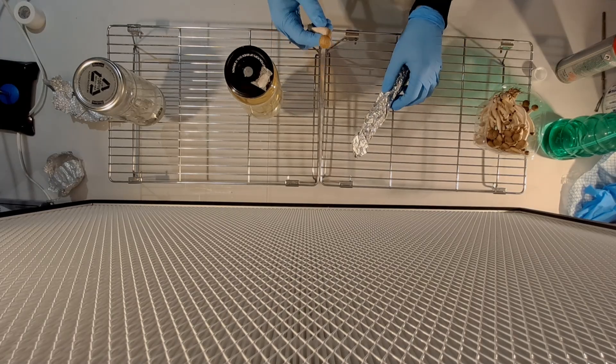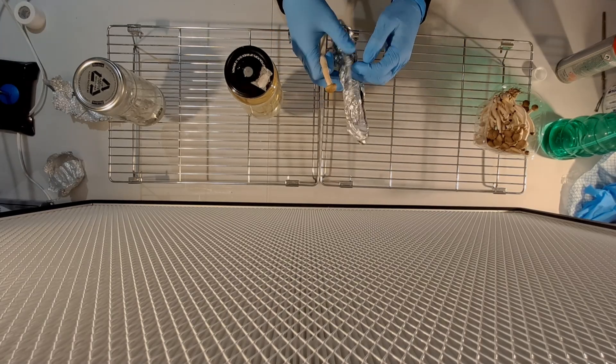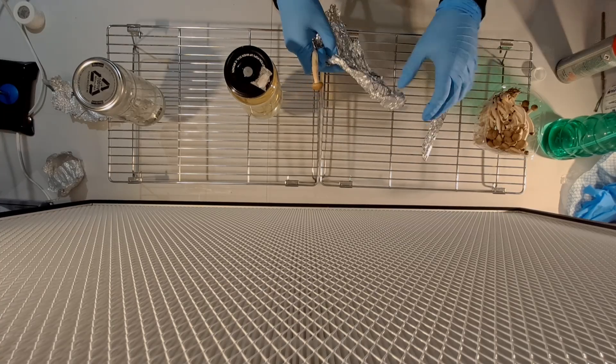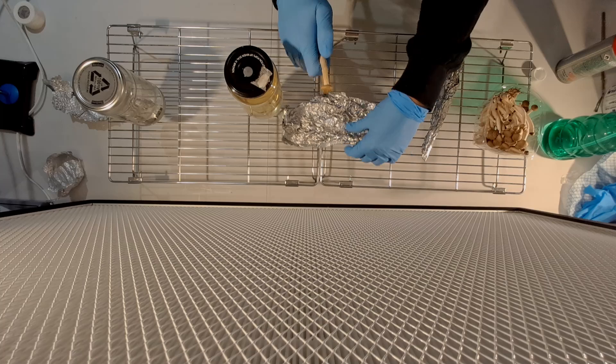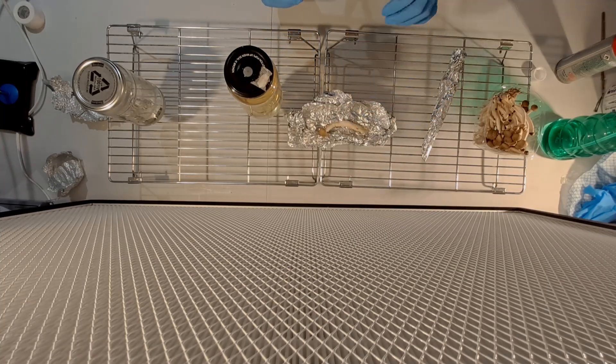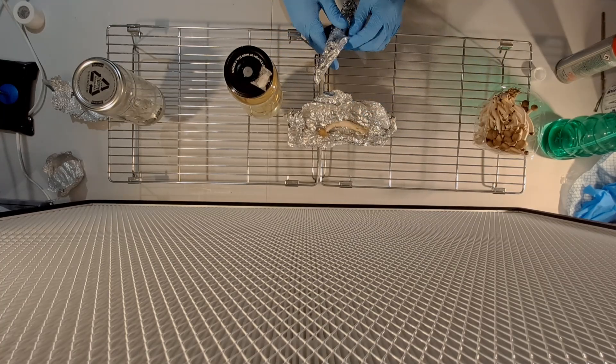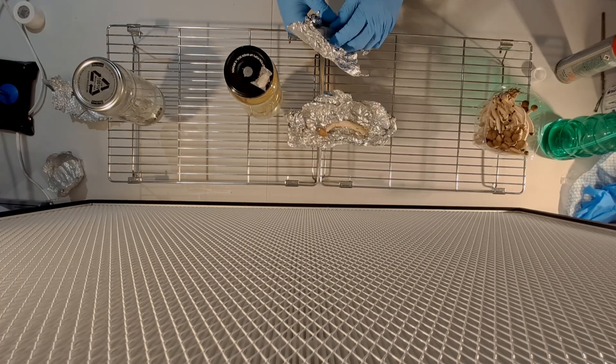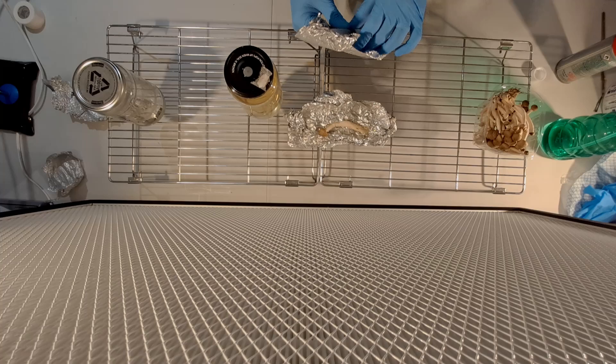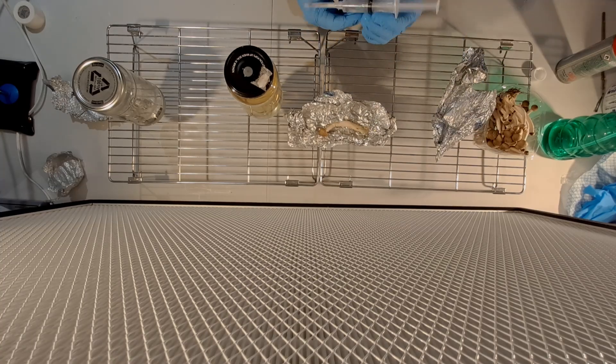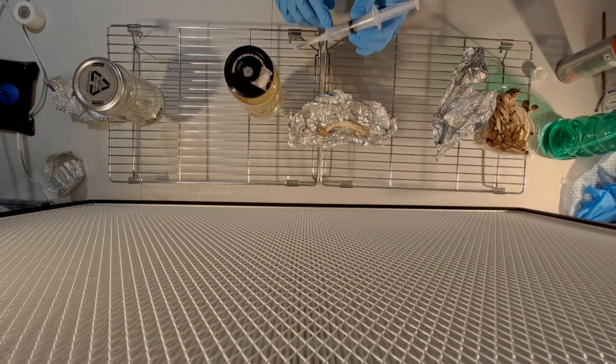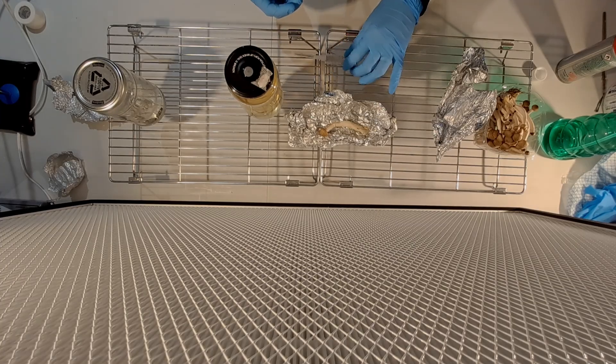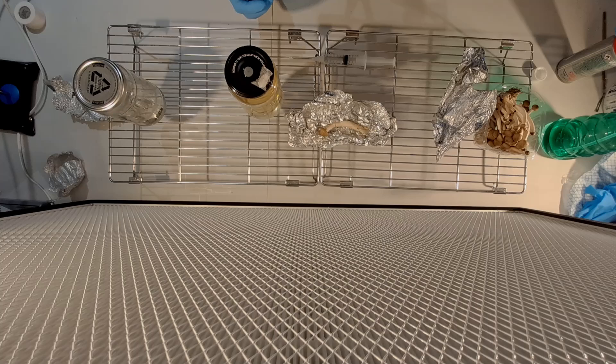Remove the syringe from the sterile double wrapped tin foil and you can use that as a placeholder if you want to put stuff down because the inside of that is sterile. The syringe and the needle underneath are sterile because they've come out of the pressure cooker and they will remain that way until you remove the cap.